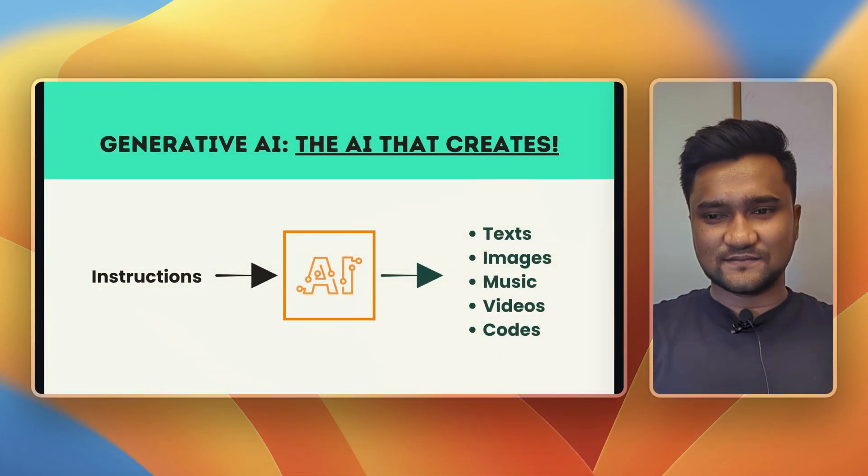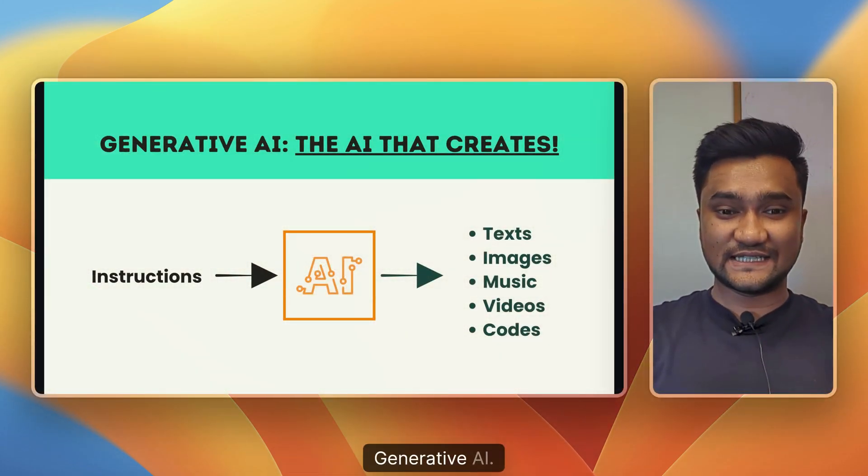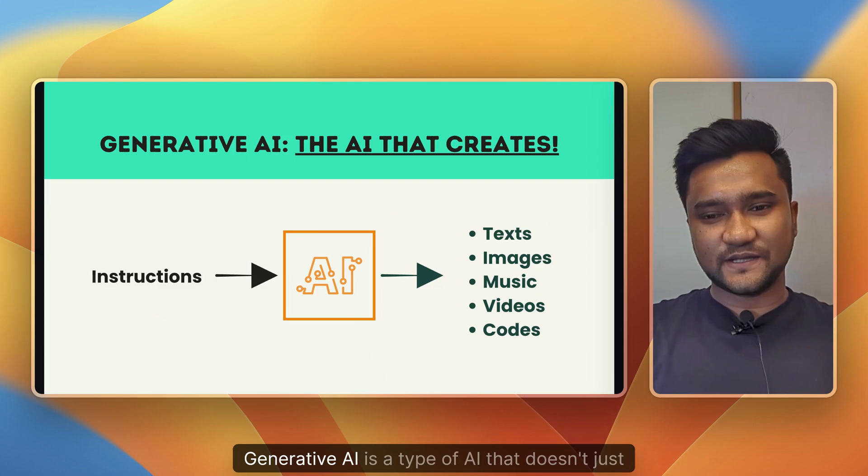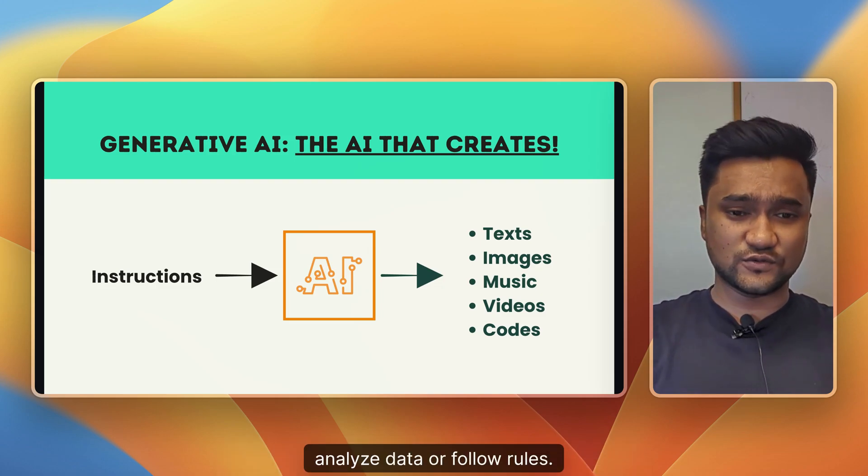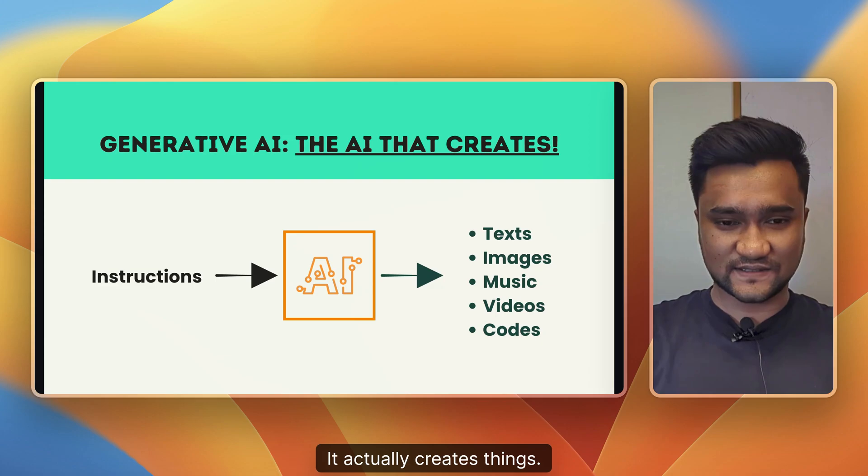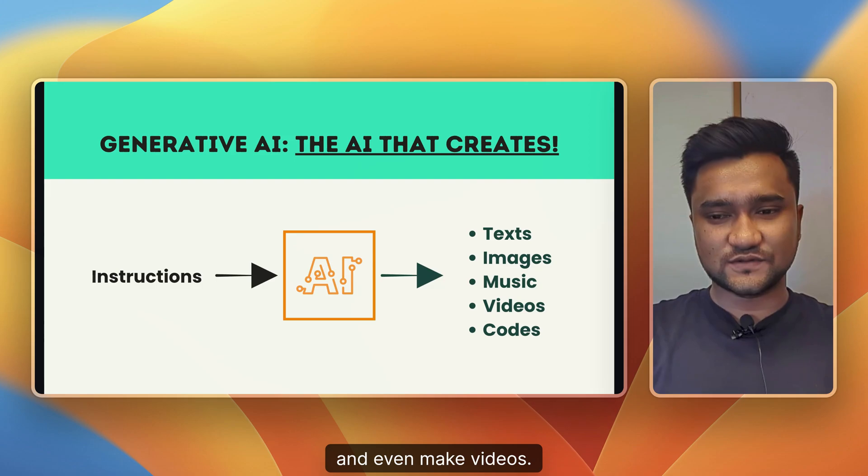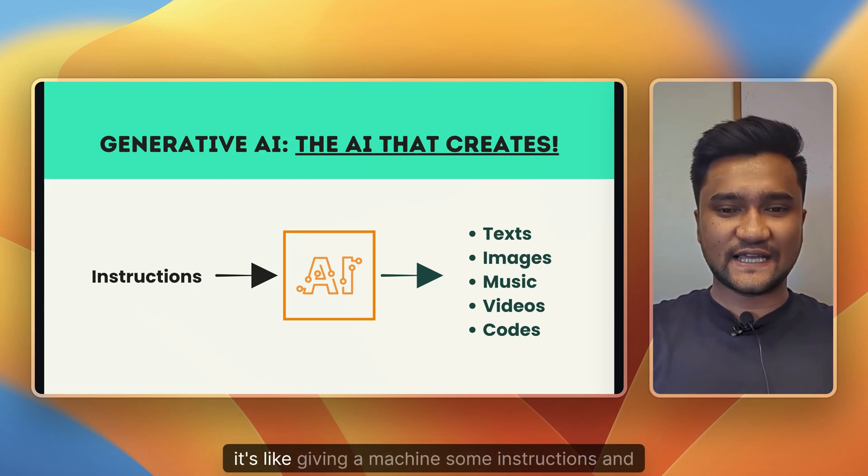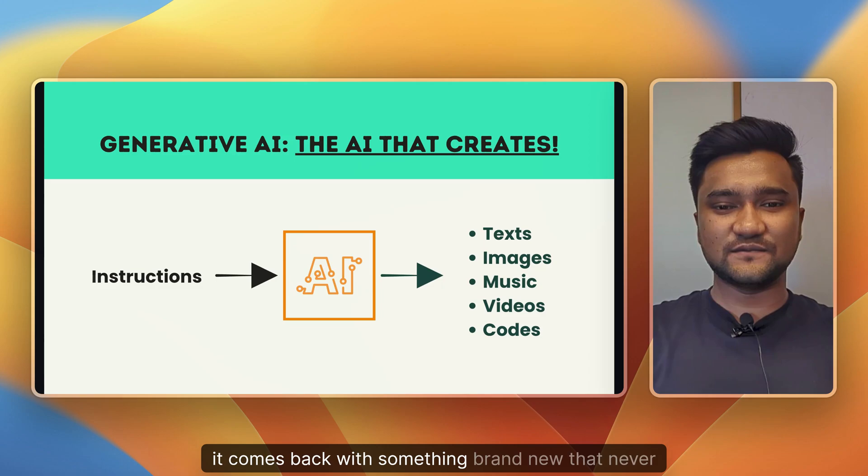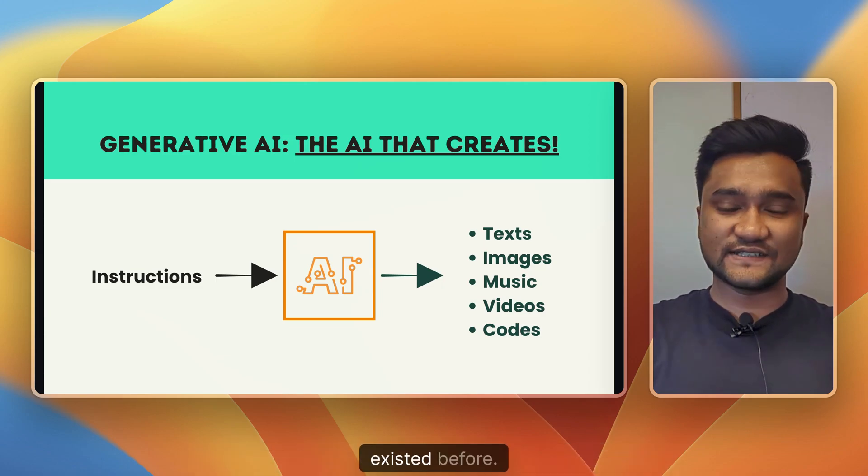So now that we know what AI is, let's dive into something specific: generative AI. Generative AI is a type of AI that doesn't just analyze data or follow rules—it actually creates things. It can write text, draw images, compose music, and even make videos. In simpler terms, it's like giving a machine some instructions and it comes back with something brand new that never existed before.